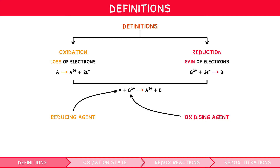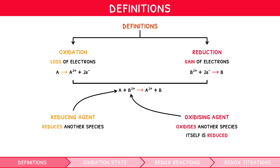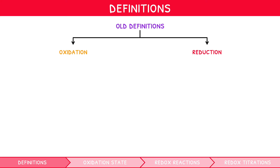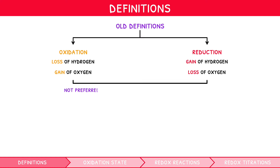Commonly used in conjunction with these two terms are two additional terms: oxidising and reducing agents. An oxidising agent is a species which oxidises another species but itself is reduced. A reducing agent is a species which reduces another species but itself is oxidised. You are also expected to be aware that the old definitions of oxidation and reduction are the loss or gain of hydrogen, or gain or loss of oxygen respectively, although these definitions are not preferred because they do not apply to every compound.